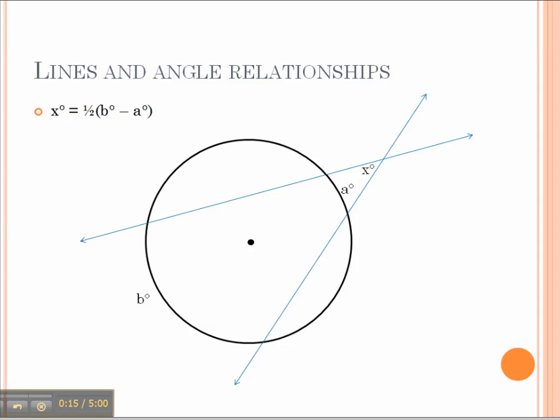such as the ones shown by these two intersecting secant lines. Let's call the angle between the secant lines angle X, and then let's call these arc angles created by the intersection on the circle angle A and angle B.